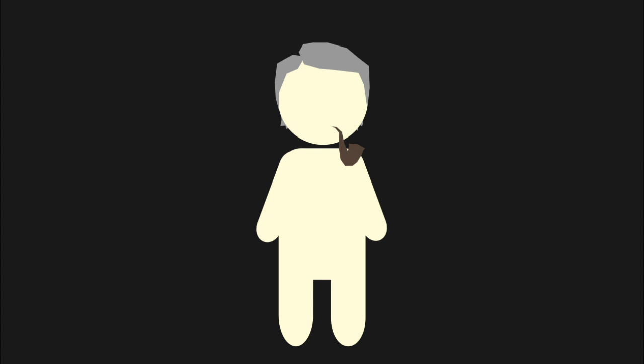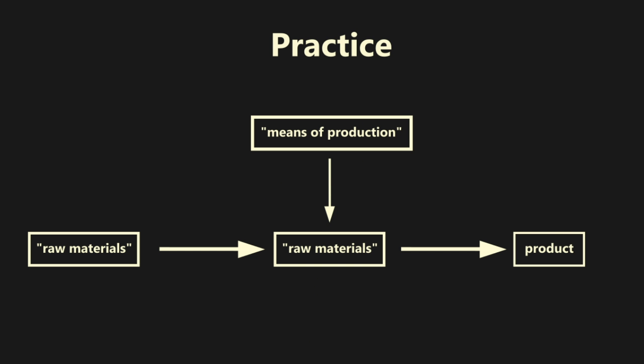We will start off with definitions that Althusser provides. Althusser notes that an evaluation of a theoretical problem requires defining the field the problem is pertinent to, locating the exact position of the problem within this field, and articulating the concepts needed to pose the problem. It is with this understanding that Althusser moves to reflect on Marx's inversion of the Hegelian dialectic. In establishing the prerequisite definitions, Althusser outlines practice as a metabolic activity in which raw material is transformed into a product through human labor using the means of production.